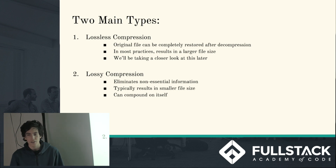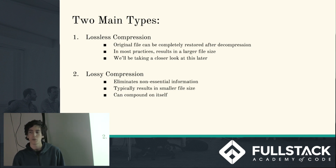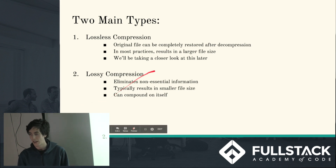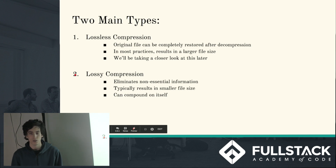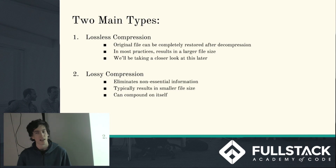Diving right in, there are two main types of file compression: lossy and lossless compression. Lossless compression means that the original file can be completely restored bit for bit after you decompress it, and in most practices it ends up resulting in a slightly larger file size. Lossy compression eliminates non-essential information and typically results in a smaller file size, but it can compound on itself and have some drawbacks.